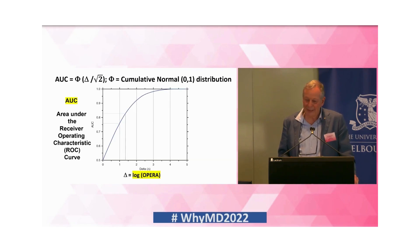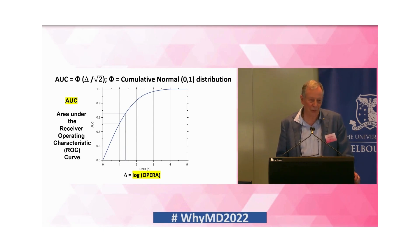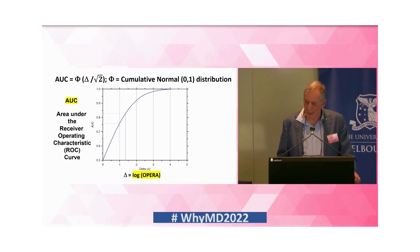Looking at the AUC and delta relationship, you see it's almost linear down the bottom side of the curve, so you can flip between the two. But I prefer to think in terms of the risk gradient.